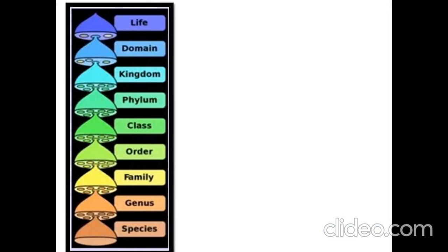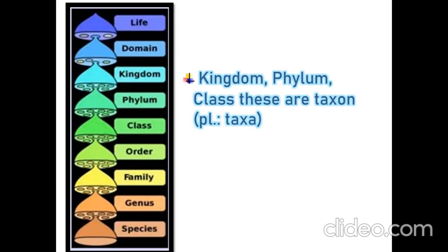Let's study a taxonomy hierarchy. It includes kingdom, phylum, class, order, family, genus, and species. These are all known as a taxon — in total, they form taxa.